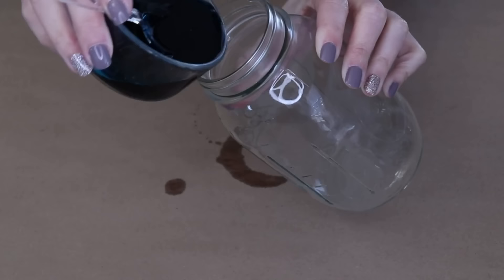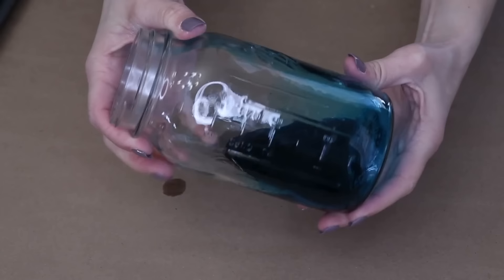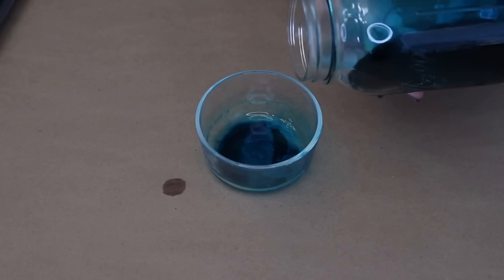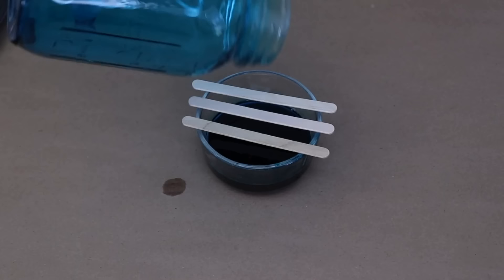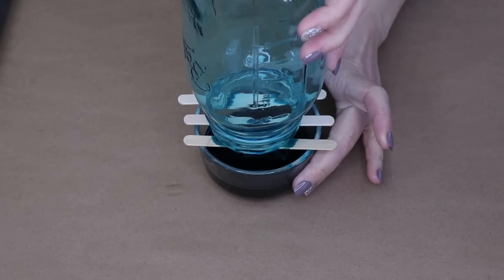Grab your mason jar, make sure it's nice and clean. Pour that dark blue mixture into the jar and swirl it around so it covers everything. Once you've swirled it all around, you can dump the excess back into the original container.